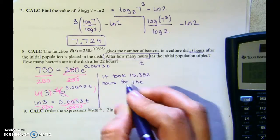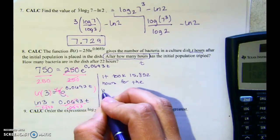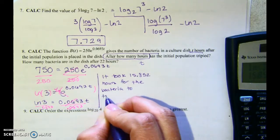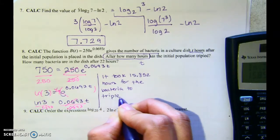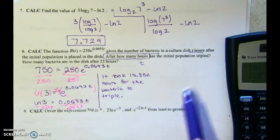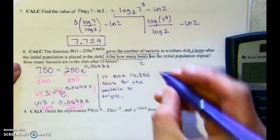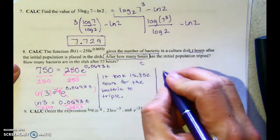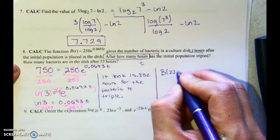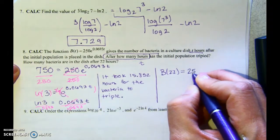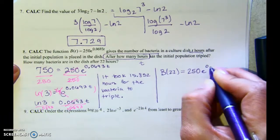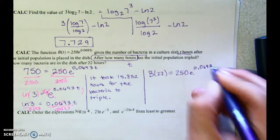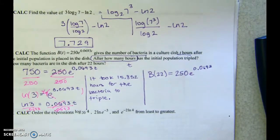It took 15.85 hours for the bacteria to triple. The second question asks: how many bacteria are there after 22 hours? You just plug in t = 22 into the function. I'm out of time, so we'll check that answer later.